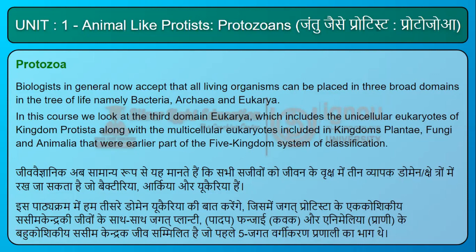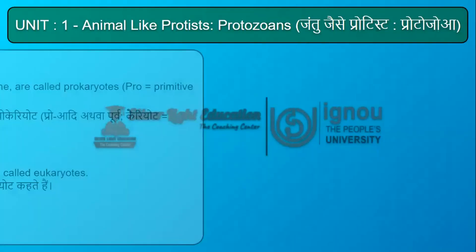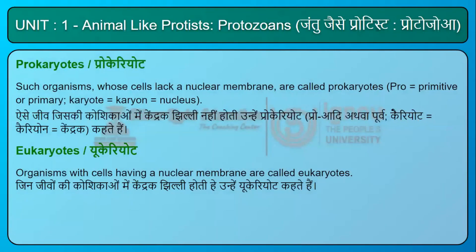Prokaryotes: organisms whose cells lack a nuclear membrane are called prokaryotes. The term 'pro' means primitive or primary, and 'karyote' derives from 'karyon' meaning nucleus.